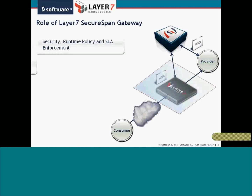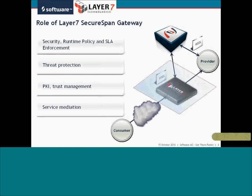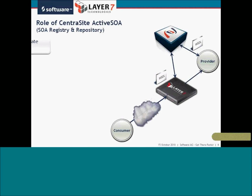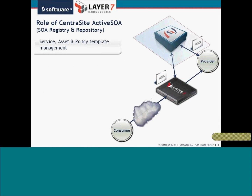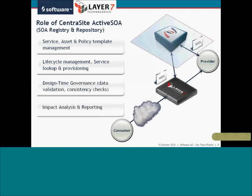The role of Layer 7 SecureSpan Gateway is all about security, runtime policy and SLA enforcement, threat protection, PKI trust management, and service mediation at runtime. The role of CentraSite Active SOA is all about service asset and policy template management, lifecycle management, service lookup and provisioning.